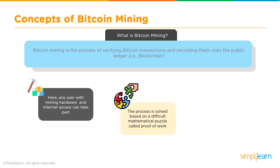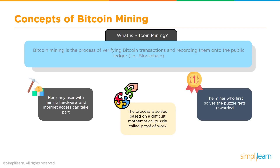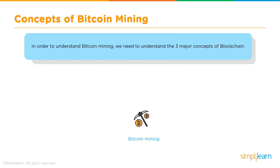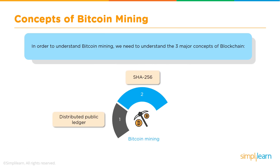Miners are participants in the network who have the necessary hardware and computing power to validate transactions. To understand Bitcoin mining, we need to understand three major concepts: the distributed public ledger, the SHA-256 encryption algorithm, and proof of work as the underlying consensus algorithm. A distributed ledger is a record of all transactions maintained in the blockchain network across the globe, and validations are done by miners.